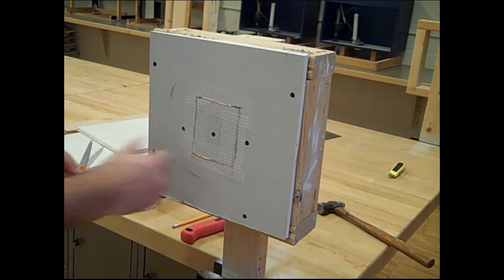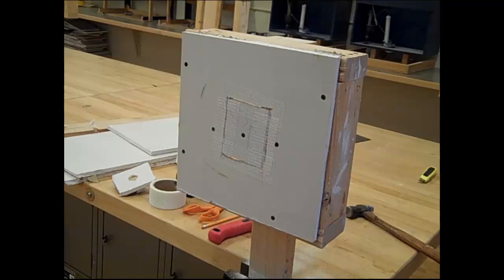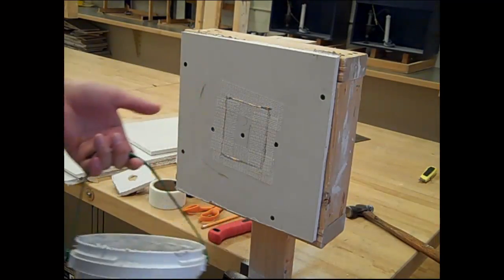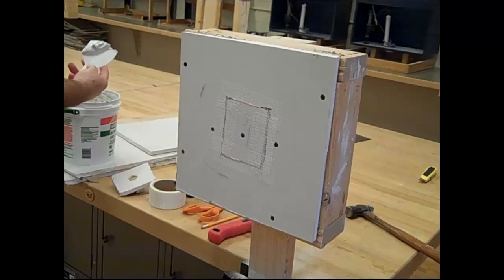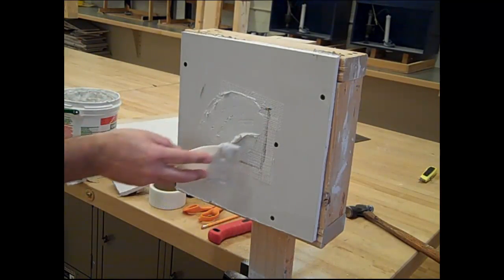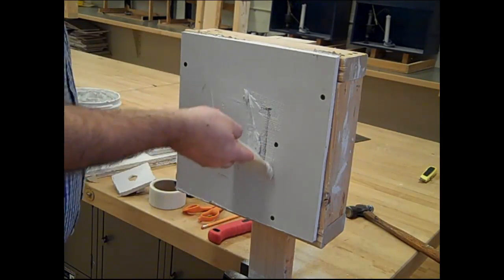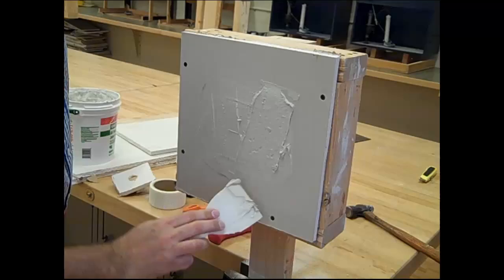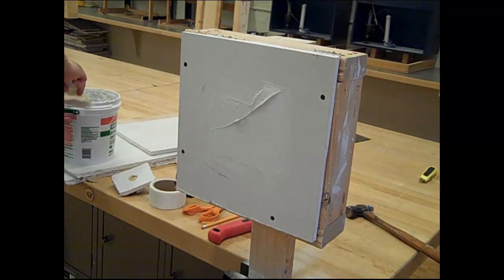To apply the mud, get a gallon of sheetrock compound and one of these spackle knives. Take a little bit of spackle and smear it on. It's kind of like frosting a cake. Cover up the hole, squeeze it through those square openings in the tape. Any extra you have, scrape it back off into the bucket. This would be coat one.